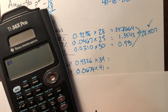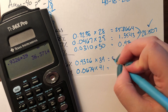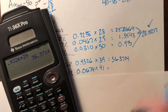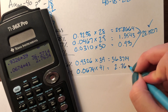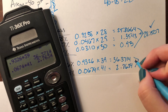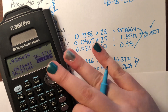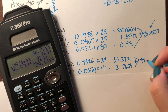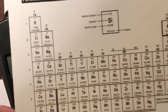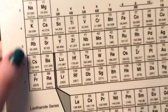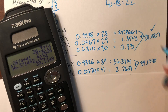Multiplying: 0.9326 times 39 gives 36.3714, and 0.0674 times 41 gives 2.7634. Summing those gives a mass of 39.1348. Checking against the periodic table, potassium has a mass of 39.098 — slightly different because they use more accurate percentages.